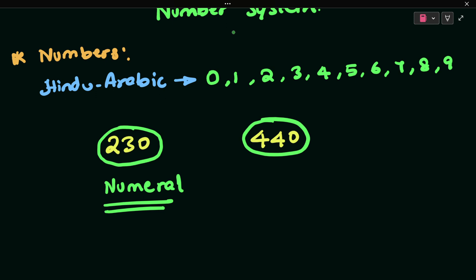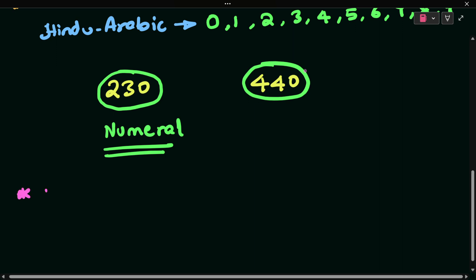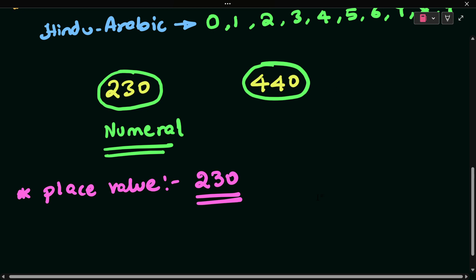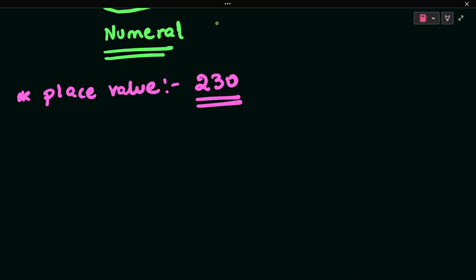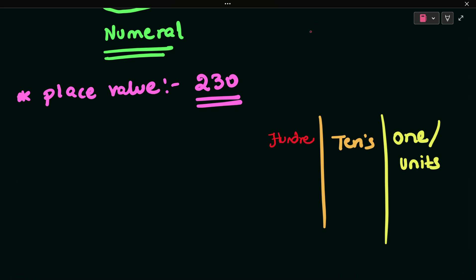Because of the place value, we can identify numerals. For example, we write 230 differently from 30 because of the place value. So let's talk about place value. Usually we write up to crores. The first place value, starting from the right side, is called ones or units place.